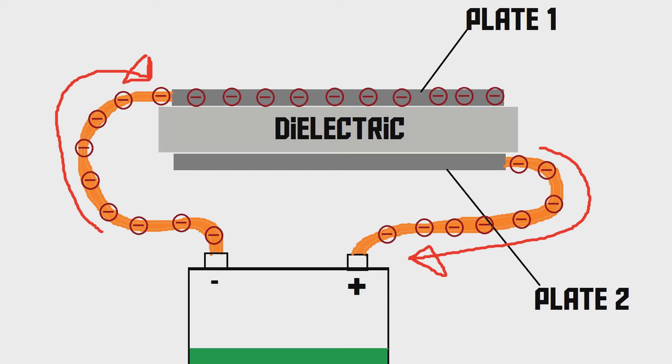The other plate, however, is going to drain electrons, because the positive side of the battery is actually sucking the electrons out of plate number two. So, plate number two actually gets a lack of electrons. So, that means it has a lack of negative particles, so it's going to be positively charged.